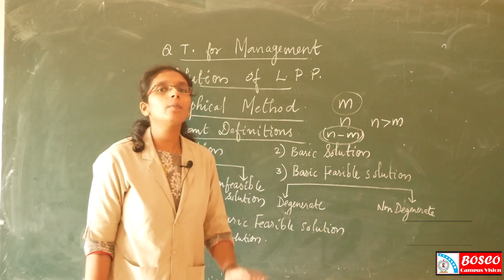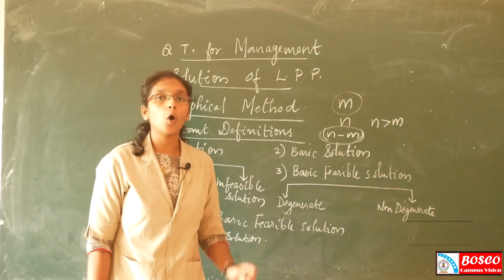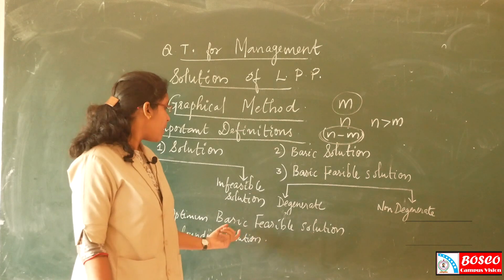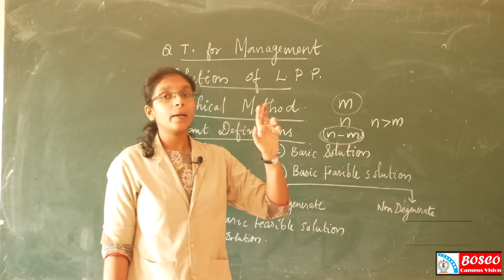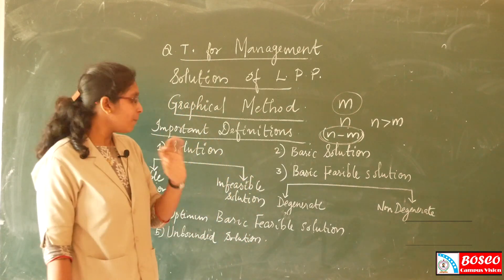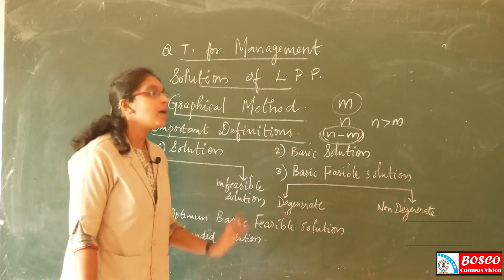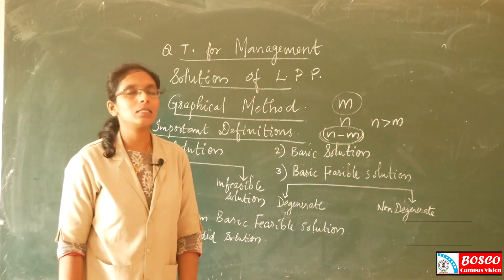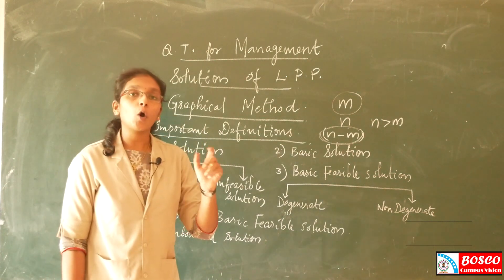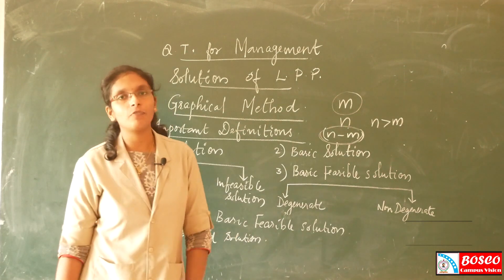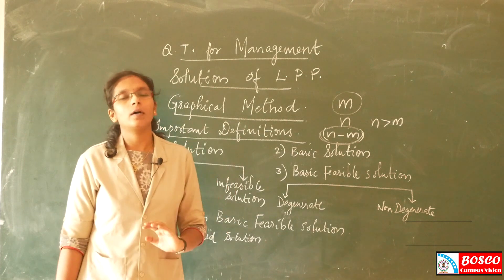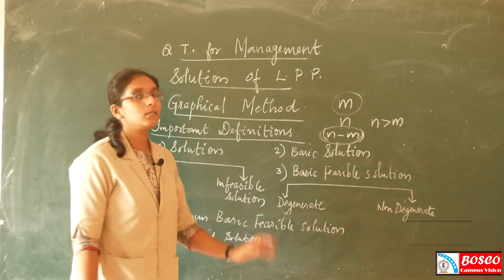The Optimum Basic Feasible Solution must satisfy three conditions: the optimum condition, the basic condition, and the feasible condition. A basic feasible solution that optimizes the objective function — either maximizing or minimizing — is called an Optimum Basic Feasible Solution.